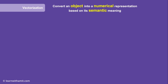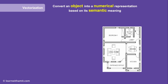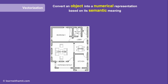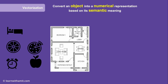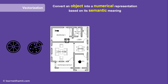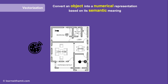Let's understand this with an example. Here we have a floor map of a house and some objects that we want to place on this map based on where they belong. We will put the bed in the bedroom, apple goes into the kitchen, alarm clock belongs to the bedroom, orange will go in the kitchen, and we will place pizza somewhere between the dining area and the kitchen.